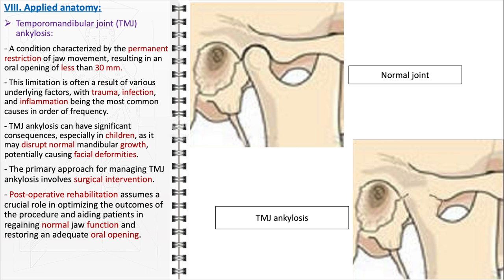In conclusion, understanding the temporomandibular joint is crucial for comprehending its intricate anatomy and functions. This bilateral synovial joint connects the mandible to the temporal bone and encompasses complex structures, including articular surfaces, the articular disc, and surrounding ligaments. The mandibular nerve, a branch of the trigeminal nerve, plays a pivotal role by providing sensory and motor functions, ensuring coordinated jaw movements. The temporomandibular joint allows for elevation, depression, protrusion, retraction, and lateral movements, essential for mastication, speech, and facial expressions. Disorders like ankylosis highlight the need for a multidisciplinary approach involving surgical intervention and post-operative care to achieve optimal outcomes.